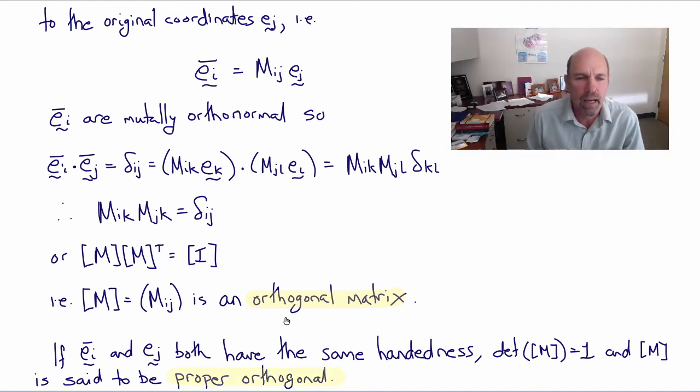We've seen that a vector is the same physical quantity regardless of the coordinate system used to measure it, but it will have different components for different coordinate systems.